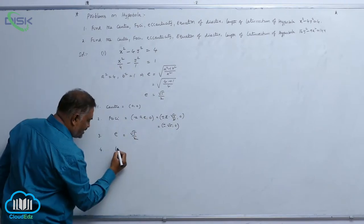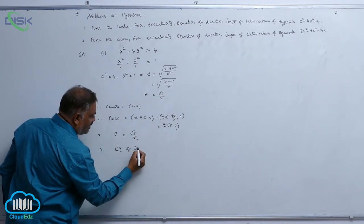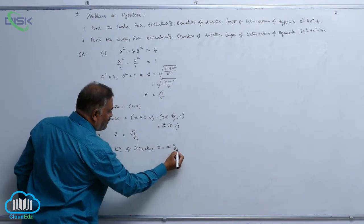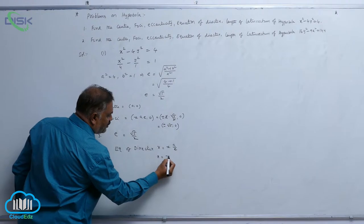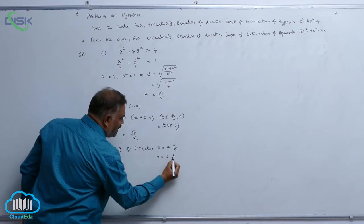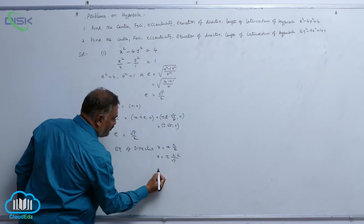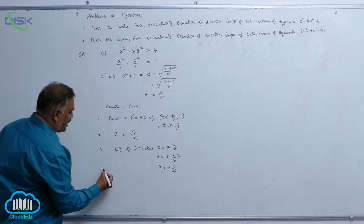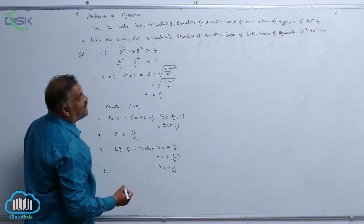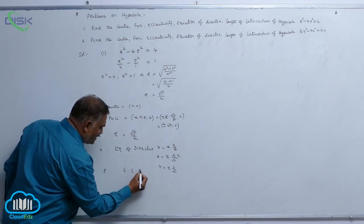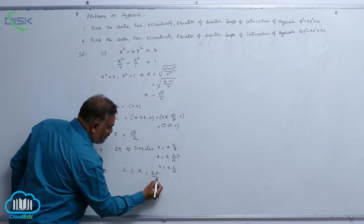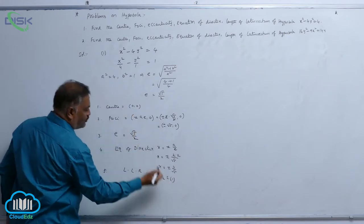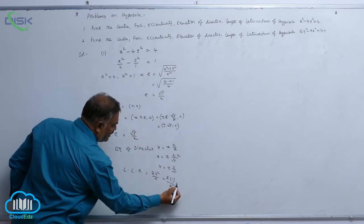Equation of directrix is given by x = ±a/e. So x = ±2 ÷ (√5/2) = ±4/√5. And lastly, the length of latus rectum = 2b²/a = 2×1/2. The 2 gets cancelled, leaving 1 unit.